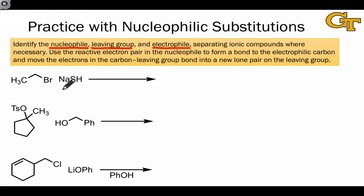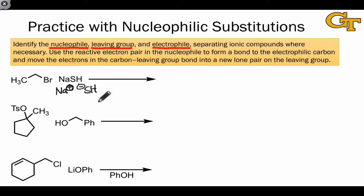For example, in this first case, NaSH isn't really NaSH — it's really Na+, the sodium cation, and SH-, thiohydroxide. Na+ is just an inert cation, but thiohydroxide has the potential to act as an electron donor, that is, as a nucleophile. We know this because of the negative charge on this molecule.